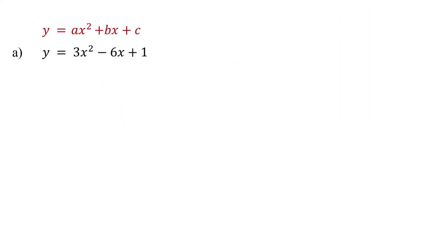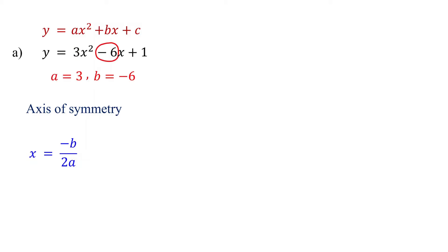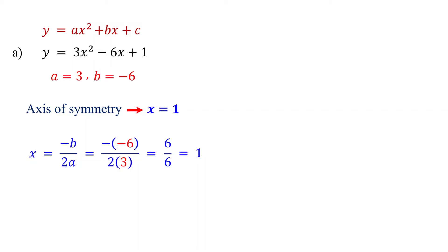For a quadratic function in standard form, we start by finding the axis of symmetry. The equation of the axis of symmetry is x equals negative b over 2a. For the given function, a is 3 and b is negative 6. Substituting these values into the formula: in the numerator, the negative of negative 6 equals 6; in the denominator, 2 times 3 is 6. This equals 1. Therefore, the axis of symmetry is the vertical line x equals 1.